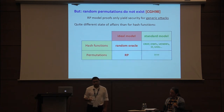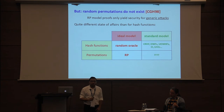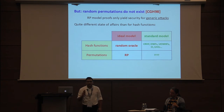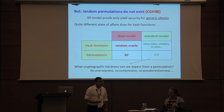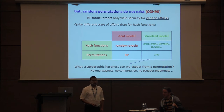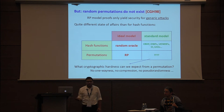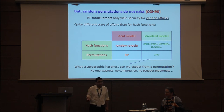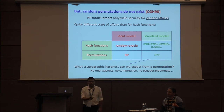This case is in stark contrast to that of hash functions, where even though the random oracle model is popular, we have a sound understanding of what standard model assumptions or properties good hash functions can satisfy. When we come to permutations, we do not know of any such properties. So the question therefore is: what kind of hardness can you expect from a permutation? Note that we cannot expect one-wayness, compression, or even pseudorandomness from a permutation.